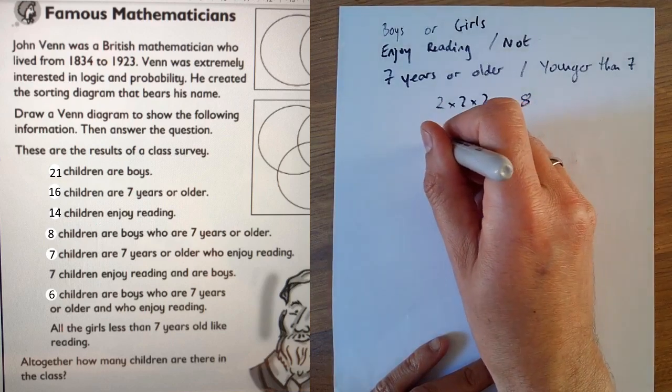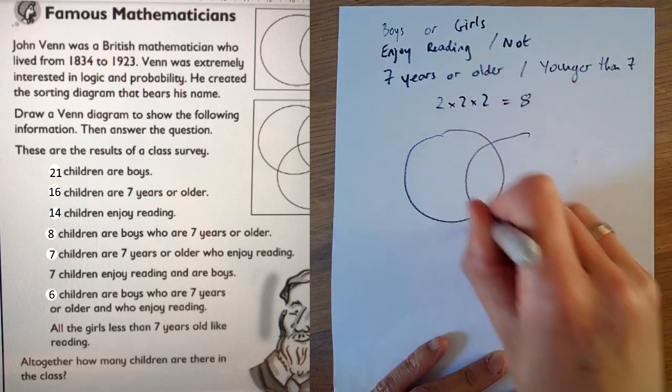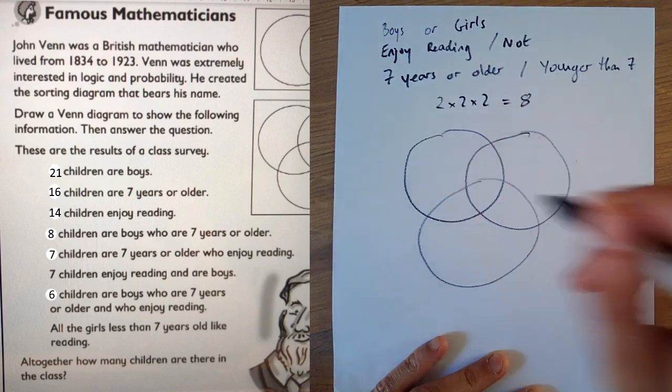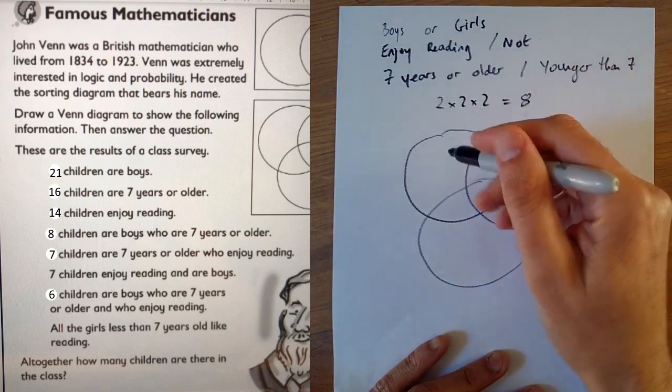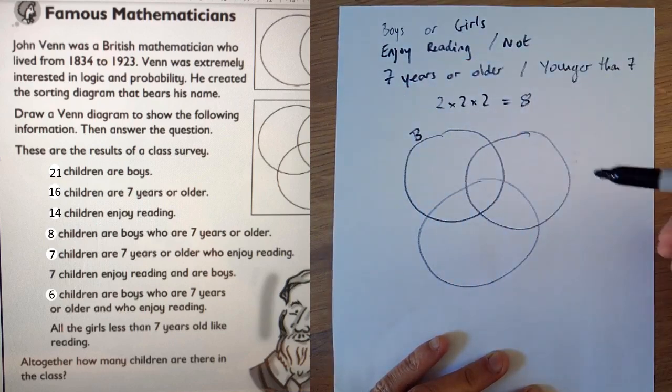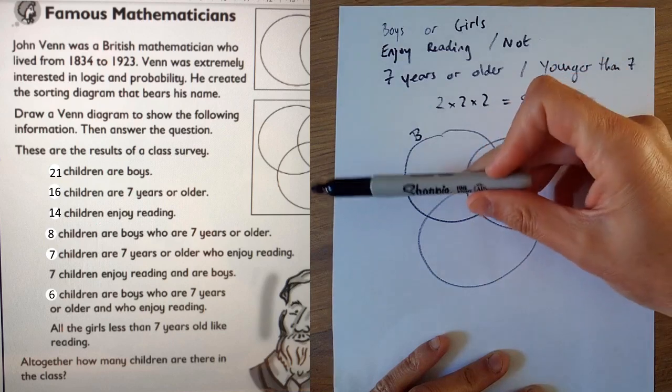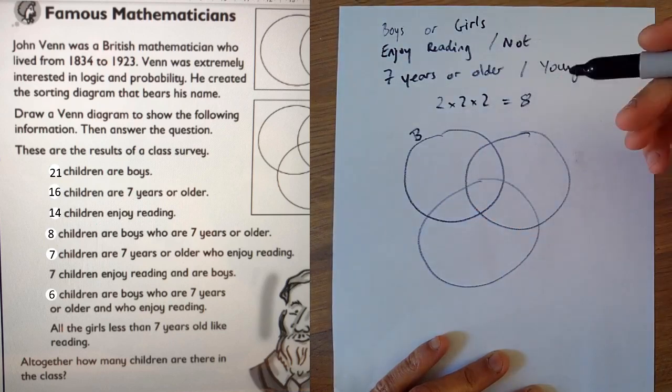So what we do is we draw this Venn diagram. We have three intersecting circles. And you should obviously draw these more neatly than me. Maybe draw round something. I should have probably drawn round this pepper grinder or salt grinder. That would have been a good idea. Anyway, we'll move on. So this first circle I've drawn here I'm going to call the boys because there's lots more information in the question over here about boys. It talks about boys a lot. It doesn't talk about girls.